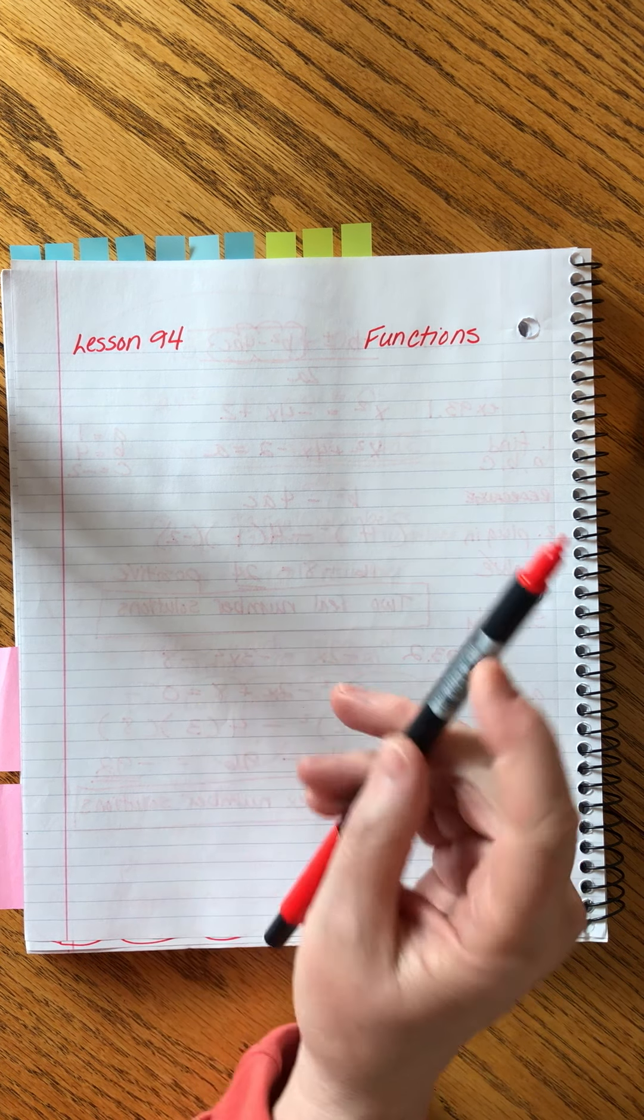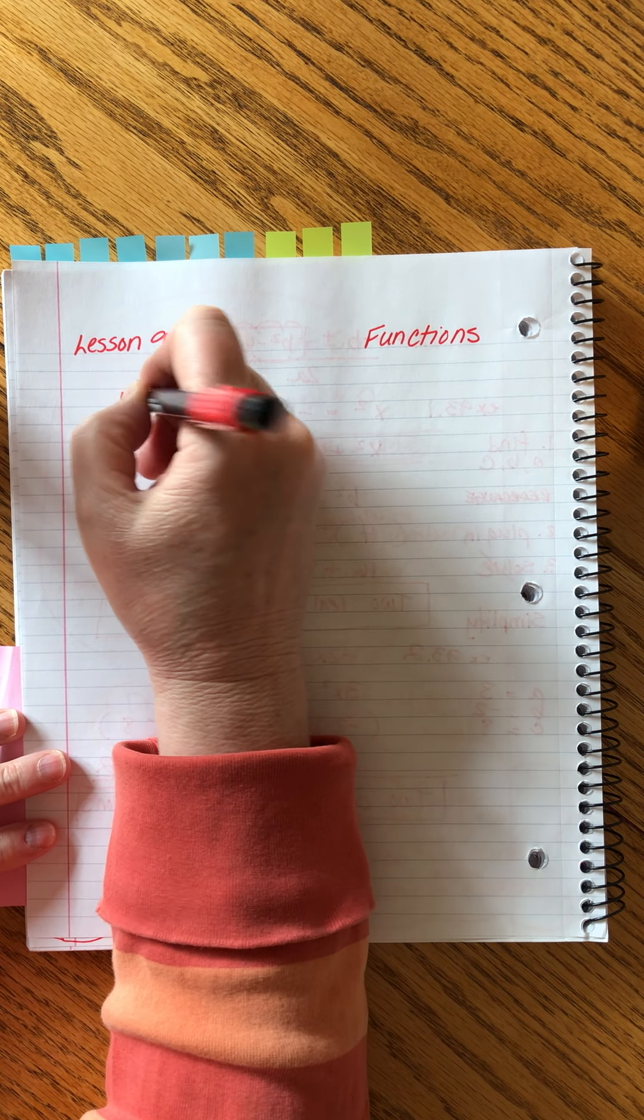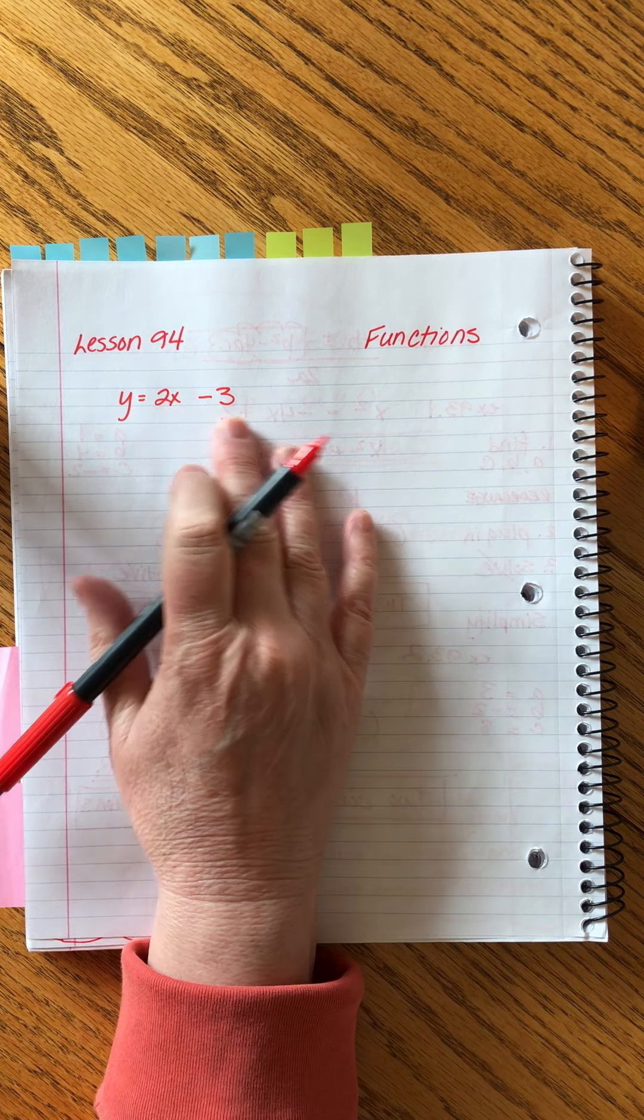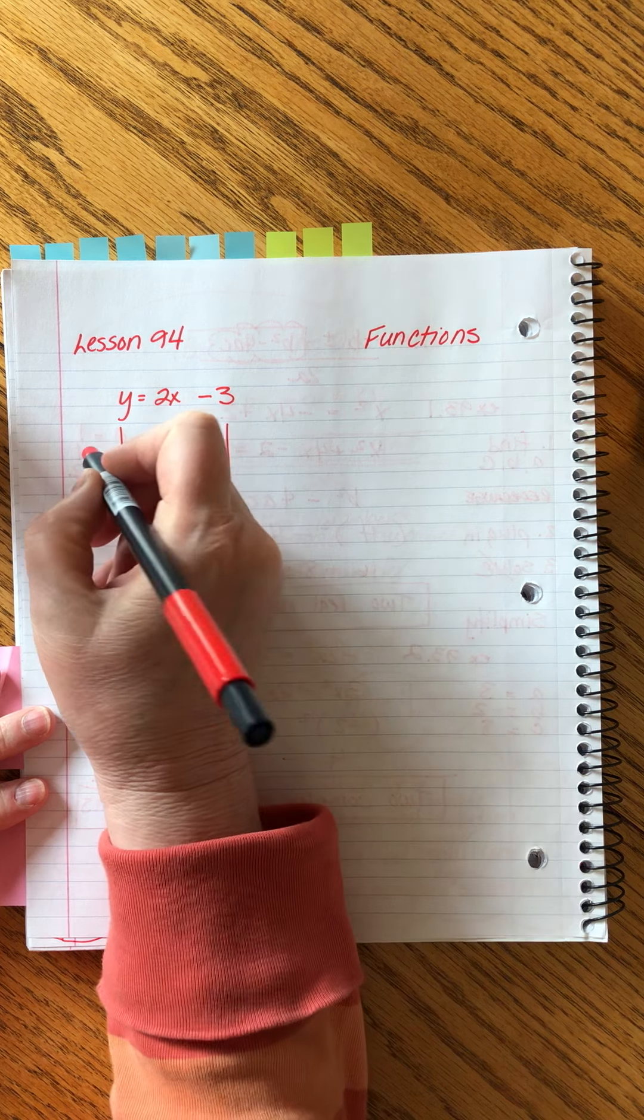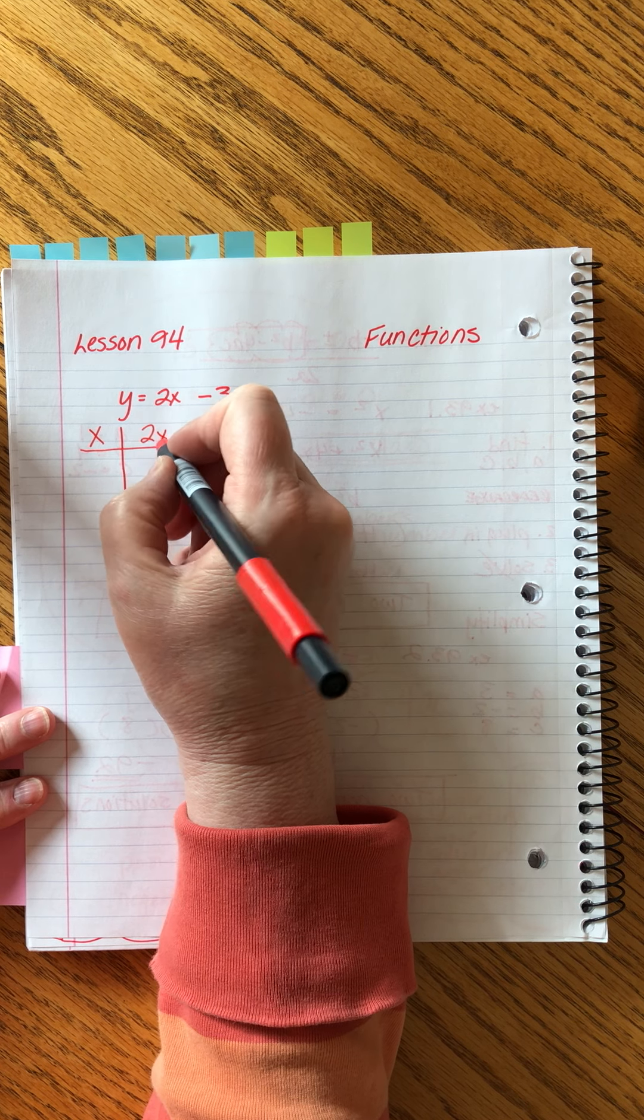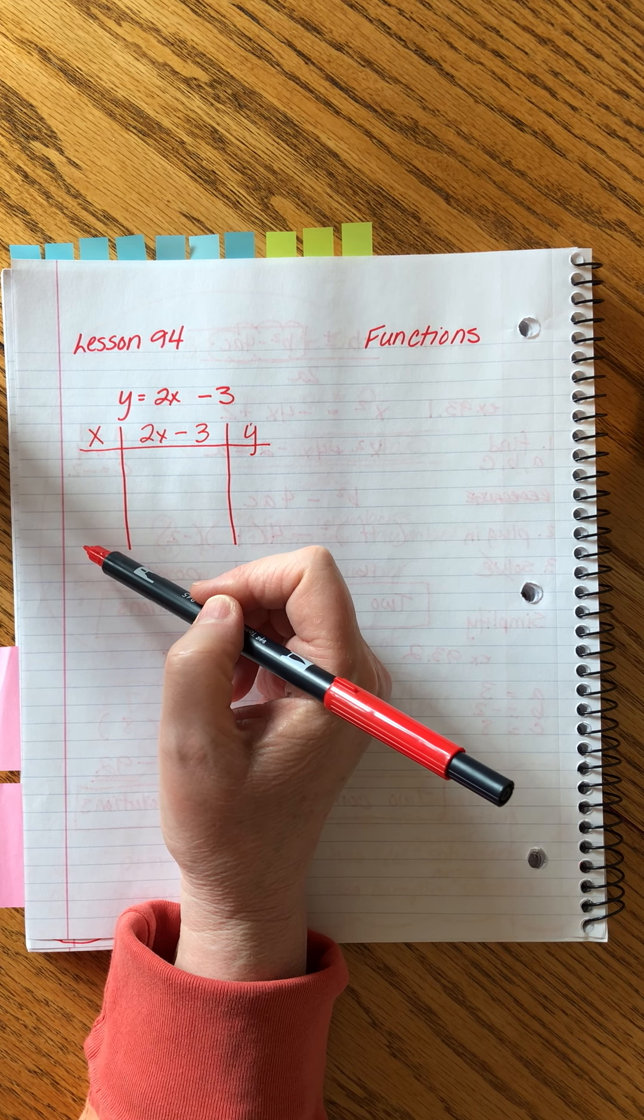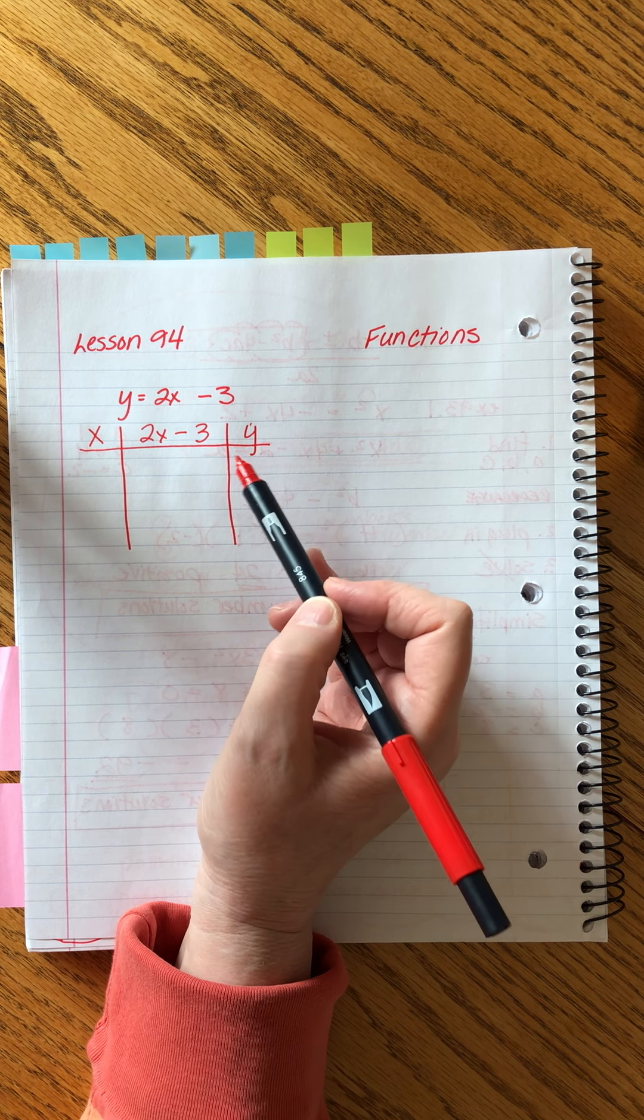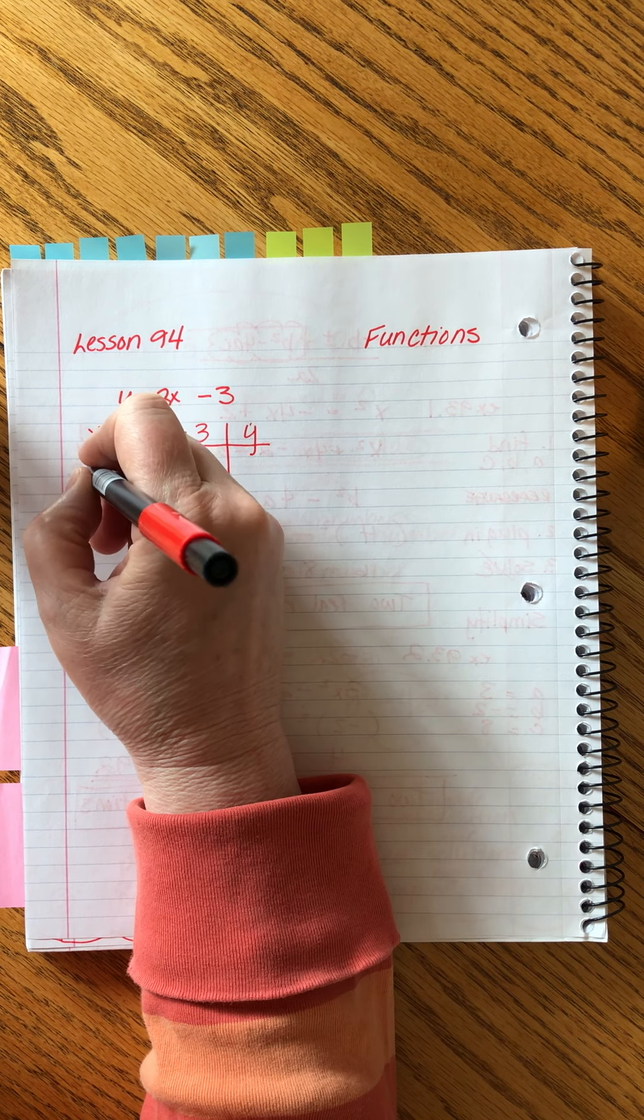Do you remember back when we first started graphing lines and we would get something like, y equals 2x minus 3, and we didn't know yet about slope and y-intercepts. So in order to graph this we would make a chart. Do you remember this? I hate this and I got you out of it really fast. But we did it like this. Where we would say, okay, choose anything you want to be the x. Plug it in and solve and then that answer is your y value. We did that.